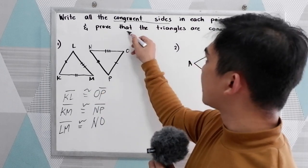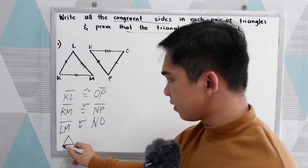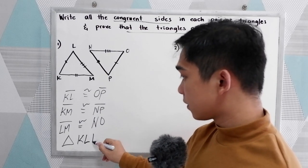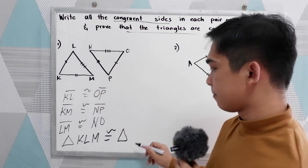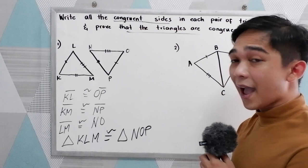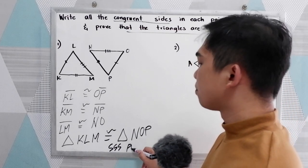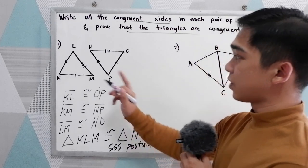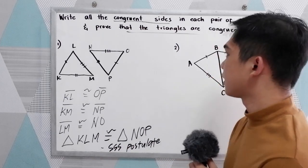Now, prove that the triangles are congruent. So, triangle KLM is congruent to triangle NOP by SSS postulate. So, the two triangles are congruent by SSS postulate.